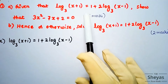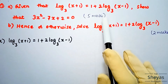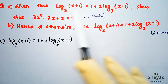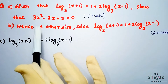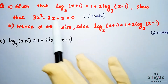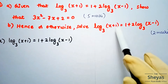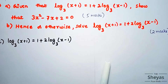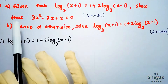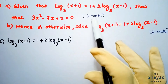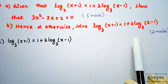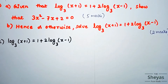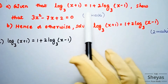First problem: given that log base 3 of (x+1) is equal to 1 plus 2 log base 3 of (x-1), show that 3x² - 7x + 2 = 0. Part B of the same question asks: hence or otherwise, solve the given equation. Solving Part A carries 5 marks and Part B carries 2 marks, making this question worth 7 marks altogether.